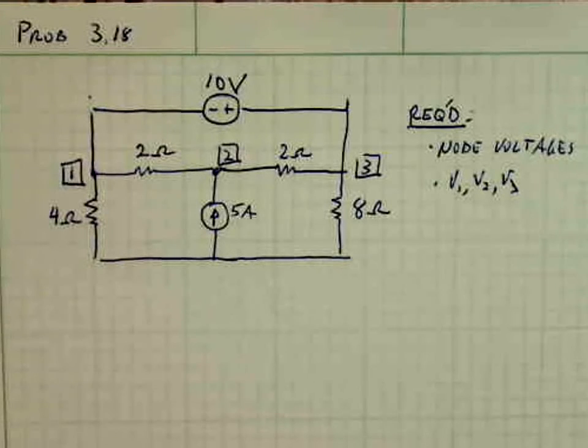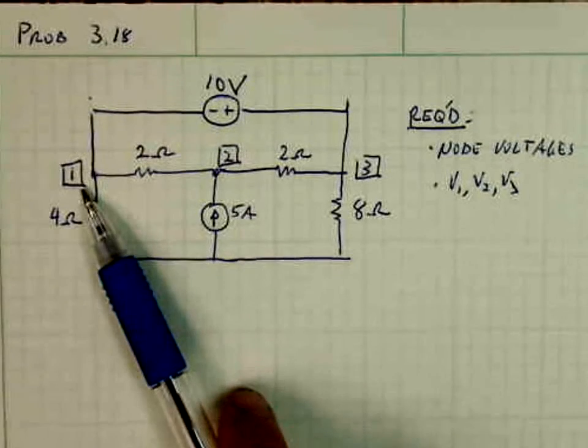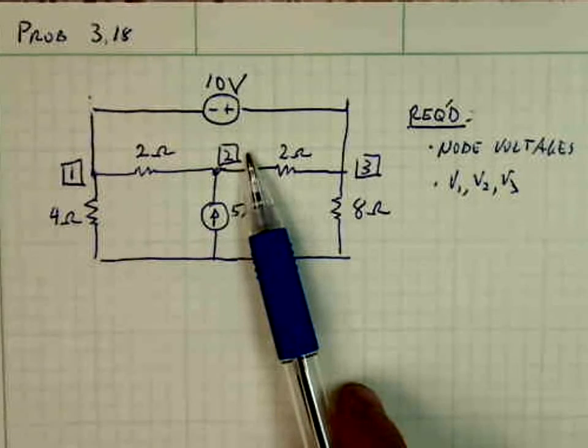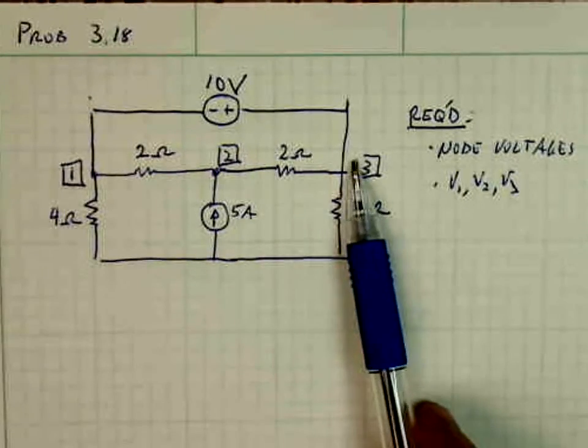And we want to find the voltages V1, V2, and V3 at node 1, node 2, and node 3.